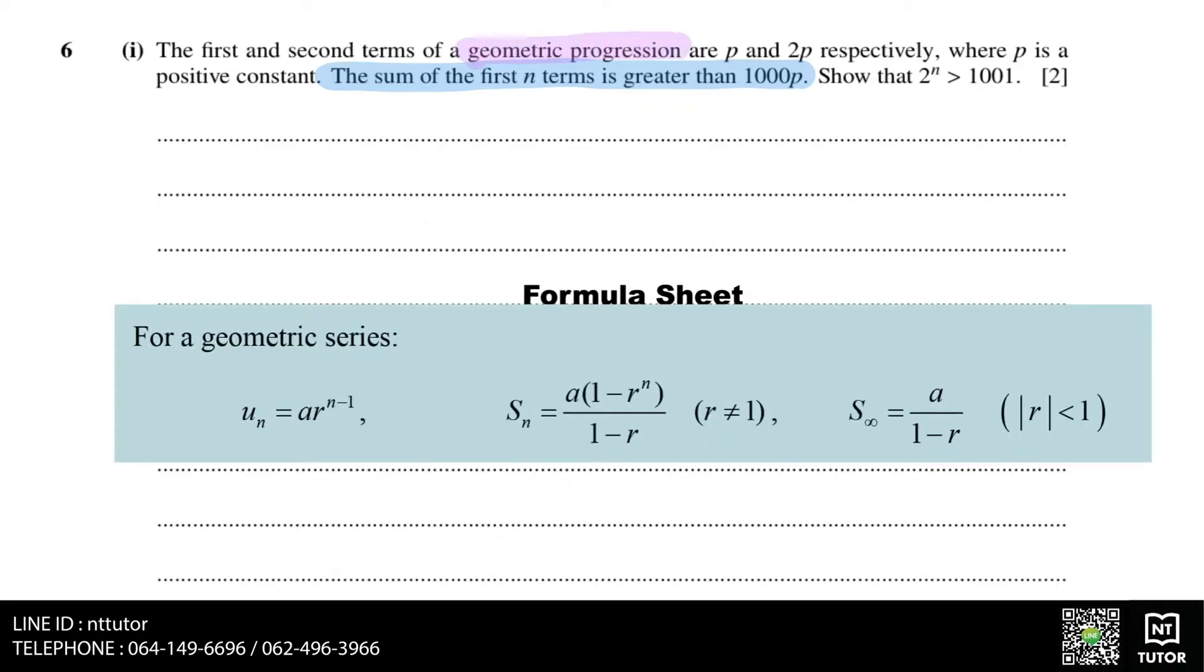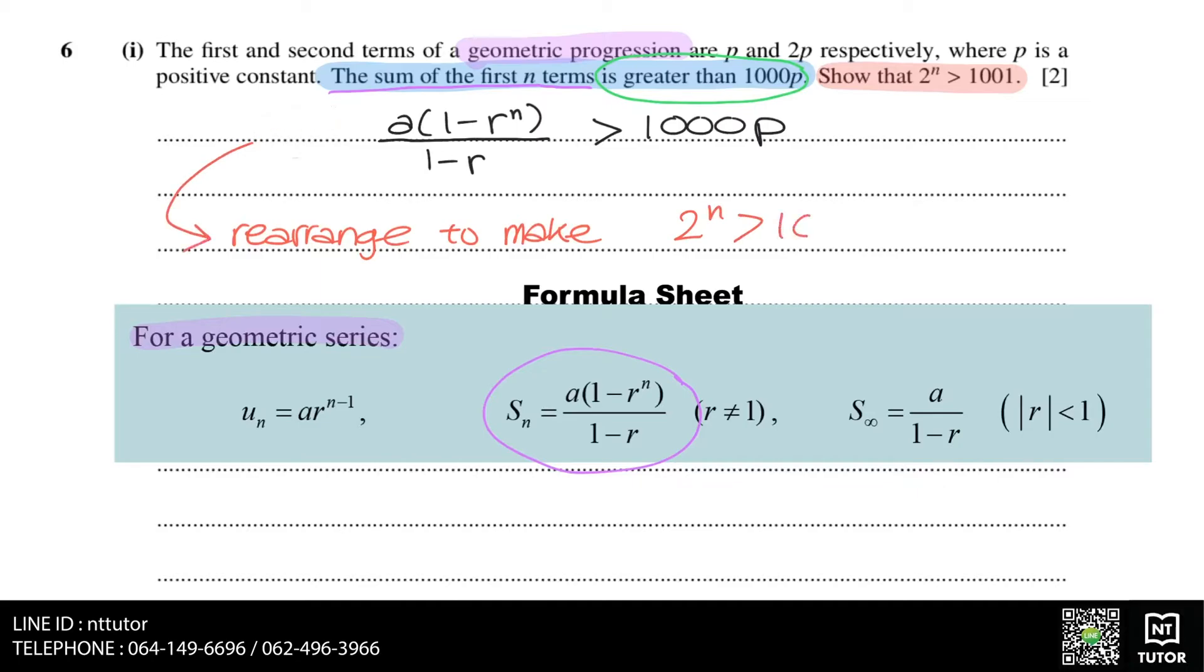From the formula sheet for a geometric series, we have a formula for the sum of the first n terms. Since the question says that the sum of the first n terms is greater than 1000p, this means we can set this expression to be greater than 1000p and try to rearrange it to make 2 to the power of n bigger than 1001.